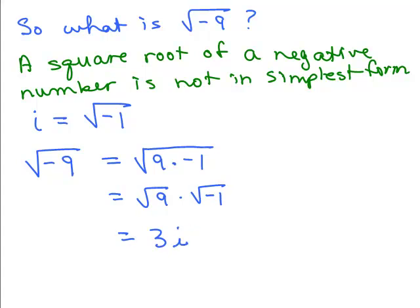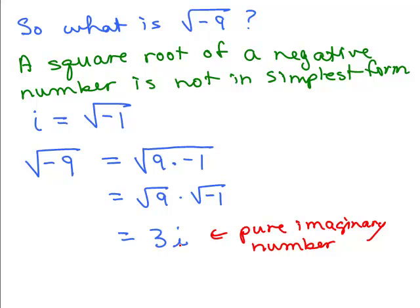So, the square root of negative 9 is actually the imaginary number 3i. When you have a number times i, it's called a pure imaginary number. They're all complex numbers, but if there's just a number times i, or just i itself, it's called a pure imaginary number.